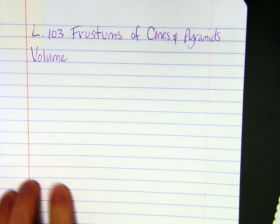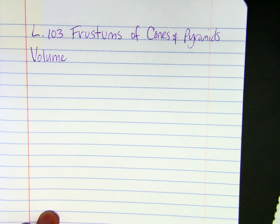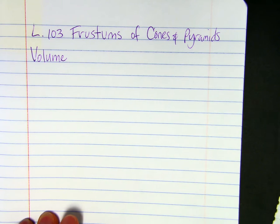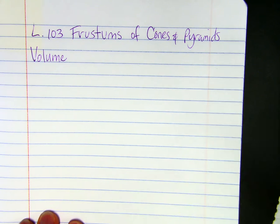So a frustum, basically, I'll tell you what it is first. If you have a pyramid or cone and you cut off the top parallel to the base, what's left is called the frustum. Without the point. I love these.